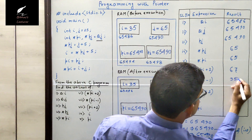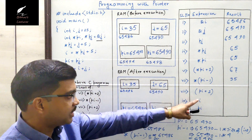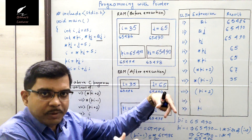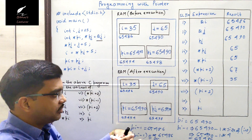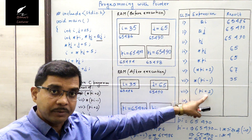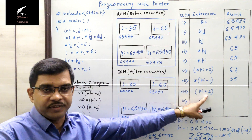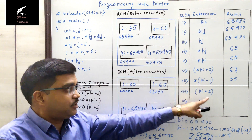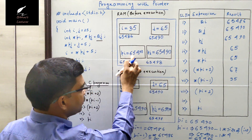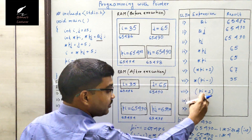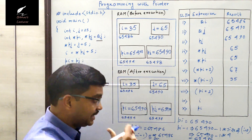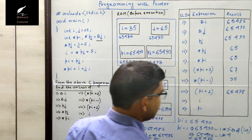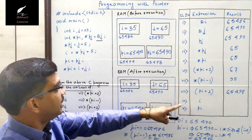Next is pi plus 2. We are incrementing an integer pointer by 2, so it will be incremented by 2 multiplied by 4 — since integer takes 4 bytes — that is 8. The value of pi is 65490, so pi plus 2 equals 65490 plus 8, which equals 65498.